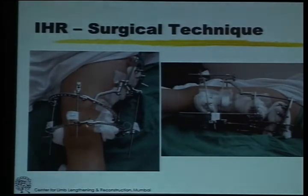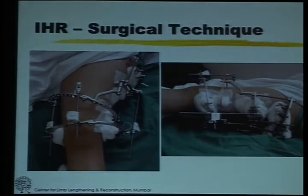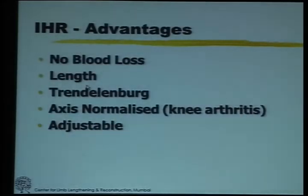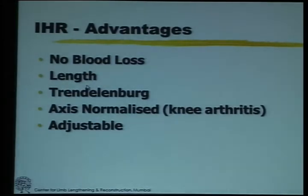The lengthening occurs between these rods which are marked with flags or tapes, and once it is lengthened with this hinge, the rotation is corrected. There are multiple advantages apart from the fact that you can do a large amount of correction. There is no blood loss with this osteotomy. You can restore the length. You definitely improve the Trendelenburg and you normalize the axis.